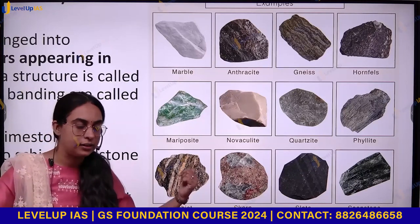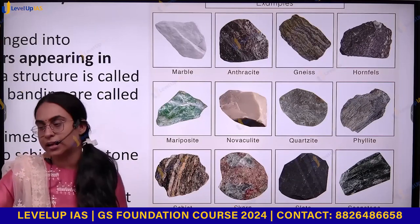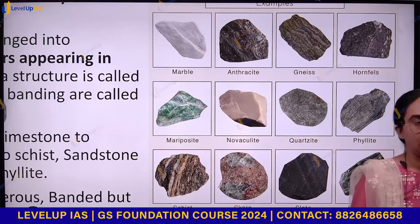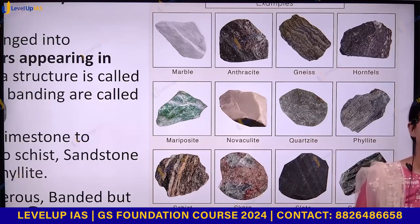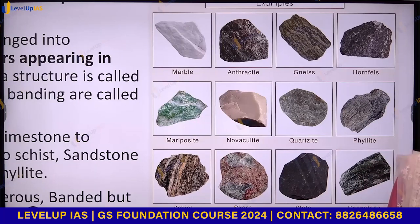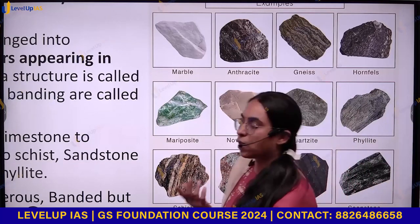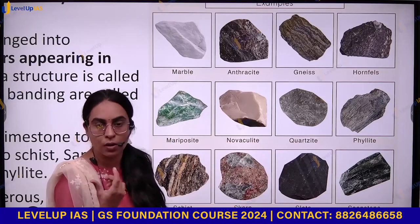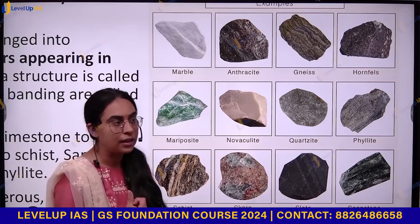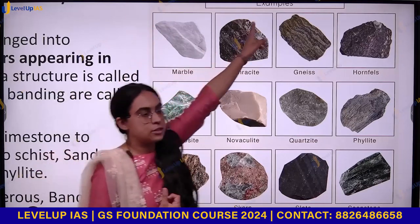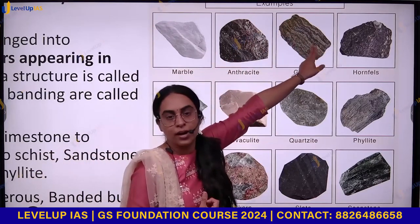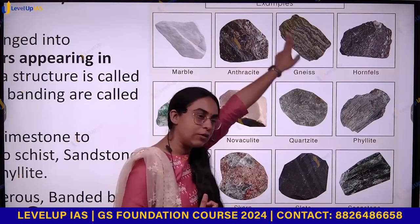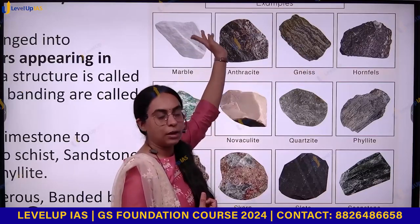Metamorphic rocks are crystalline and fossiliferous, and they are banded or foliated — but they are not layered in the separable sense. Even metamorphic rocks formed from igneous rocks will be banded. Gneiss, which is made from granite, is banded. Marble, formed from limestone, is also foliated. You can see the bands but you cannot separate the layers.